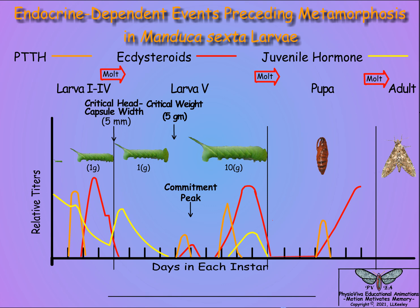During pupation, secretion of ecdysteroids in the absence of juvenoids activates adult metamorphosis by stimulating imaginal disc growth and the formation of adult structures, as described in the previous scene on metamorphosis, and initiates the sequence of eclosion events for adult emergence.